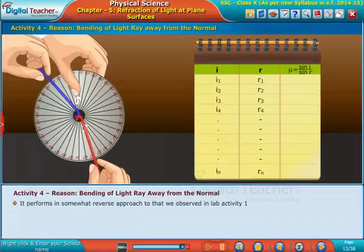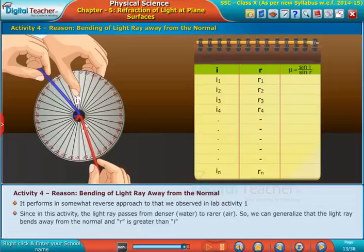Since in this activity the light ray passes from denser water to rarer air, we can generalize that the light ray bends away from the normal and r is greater than i.